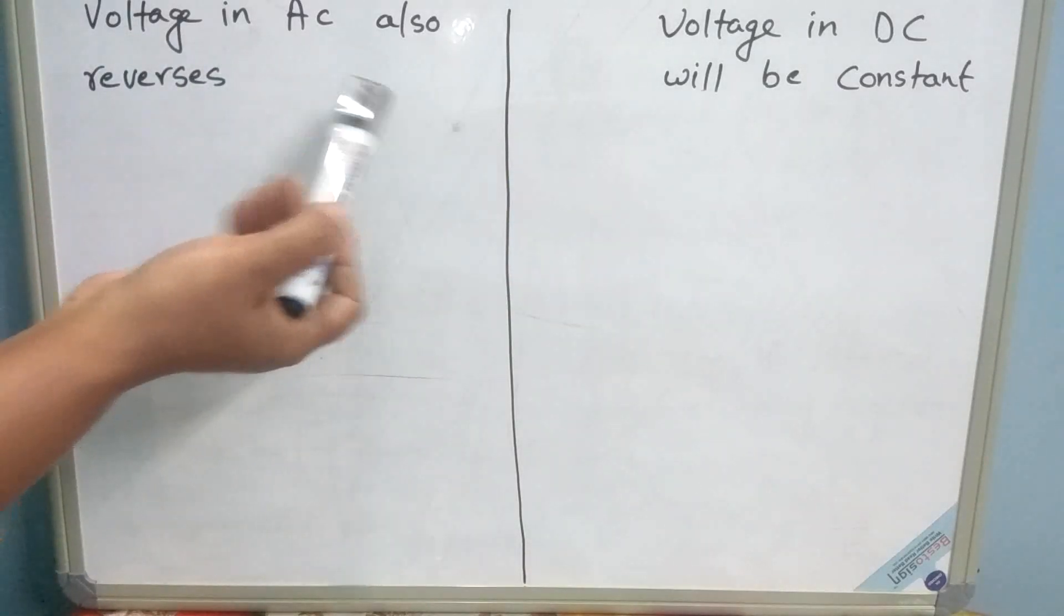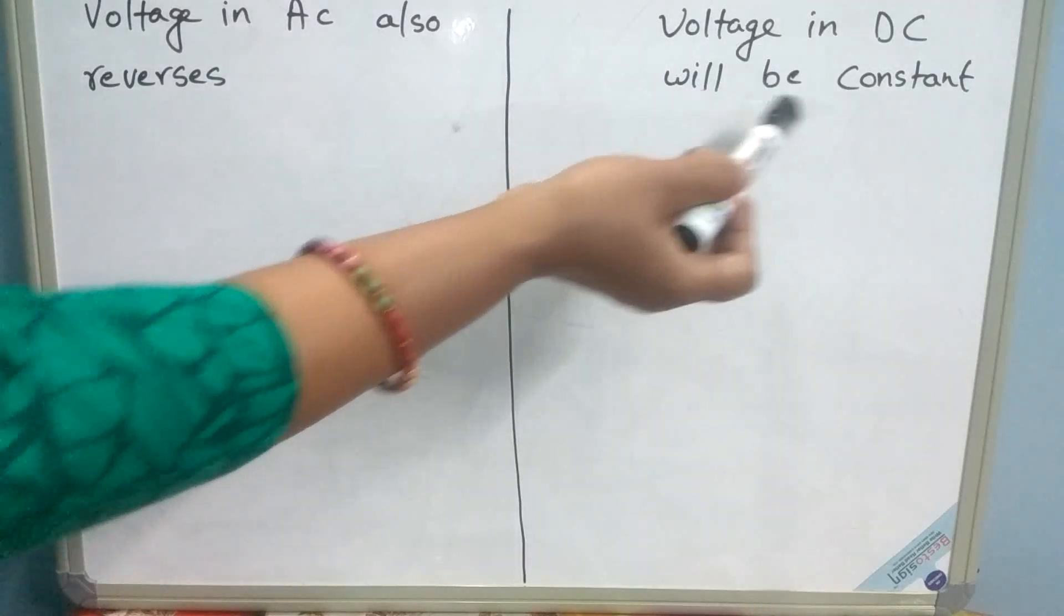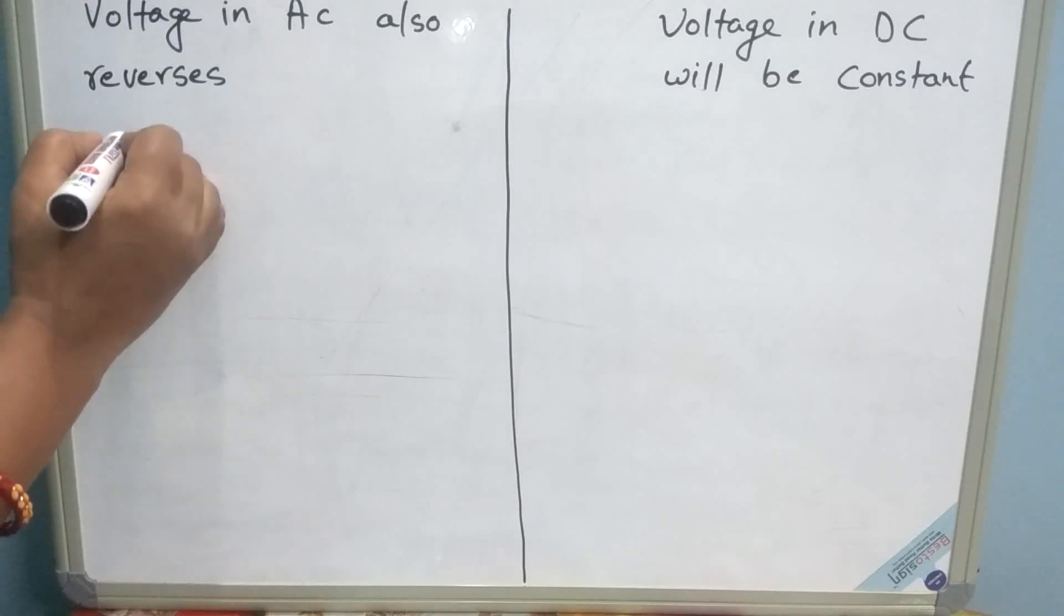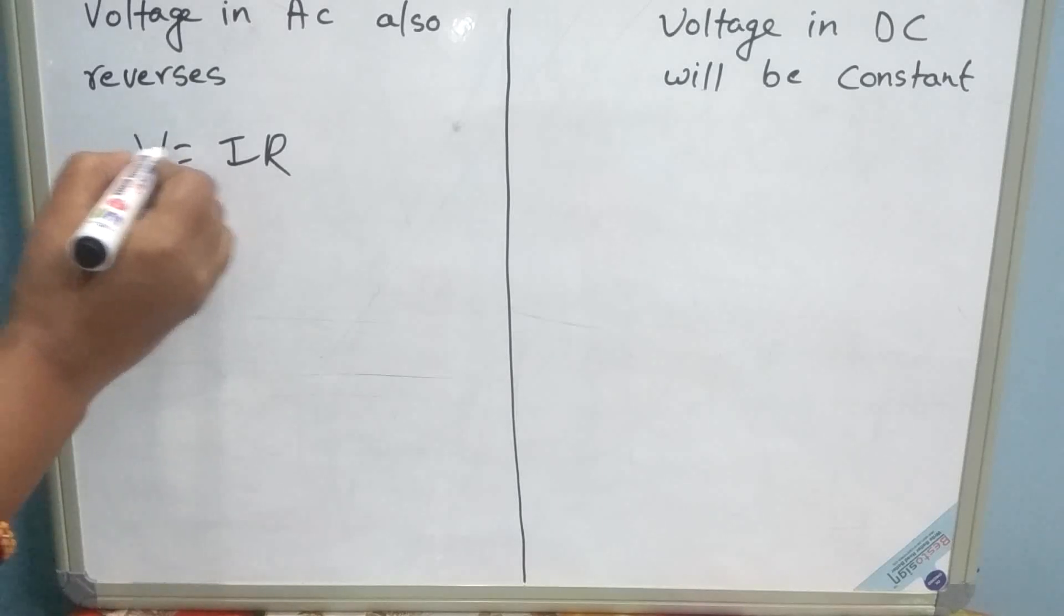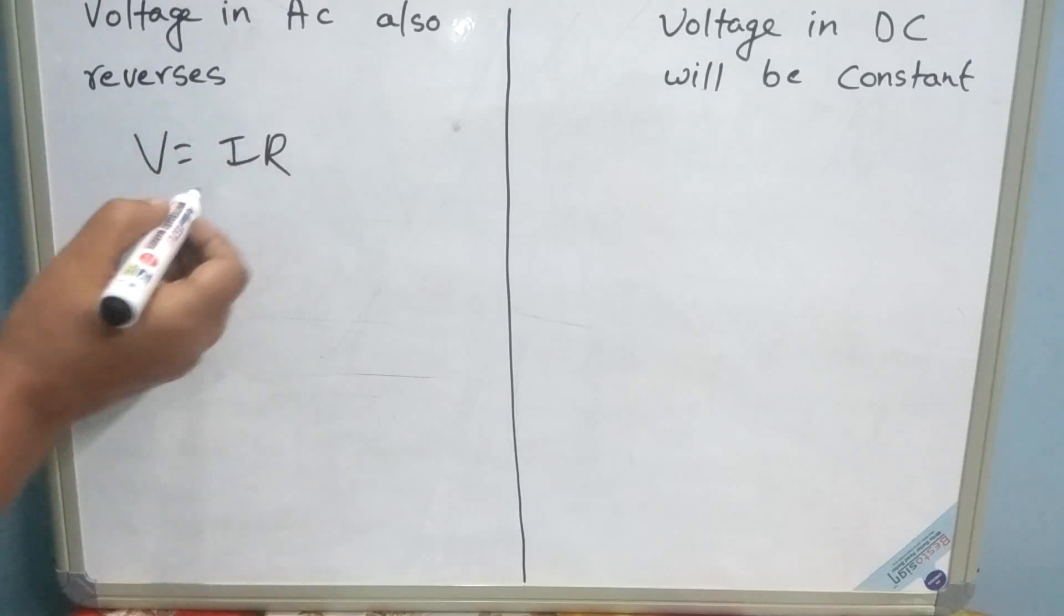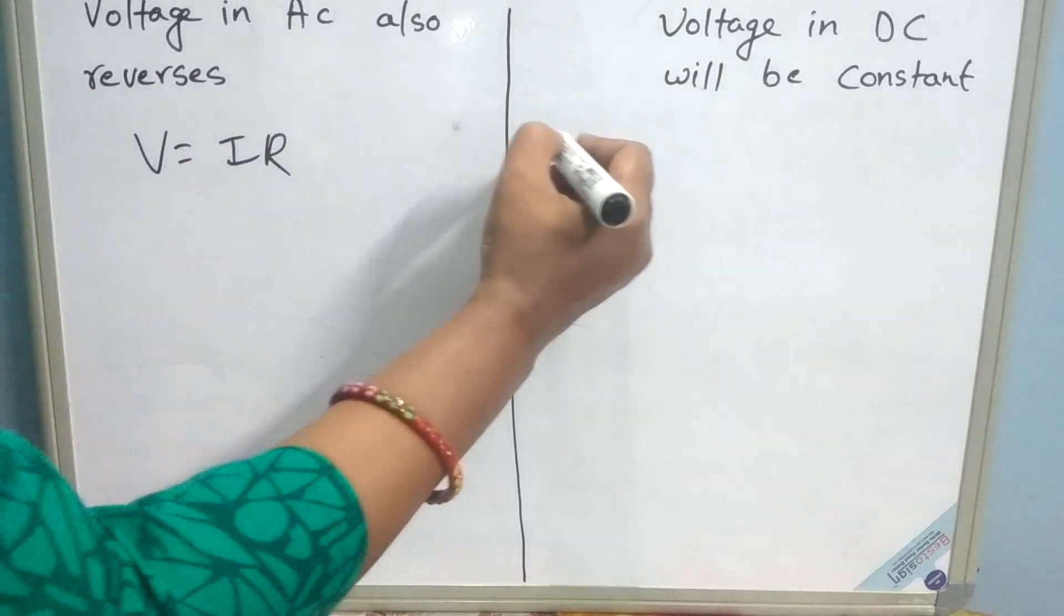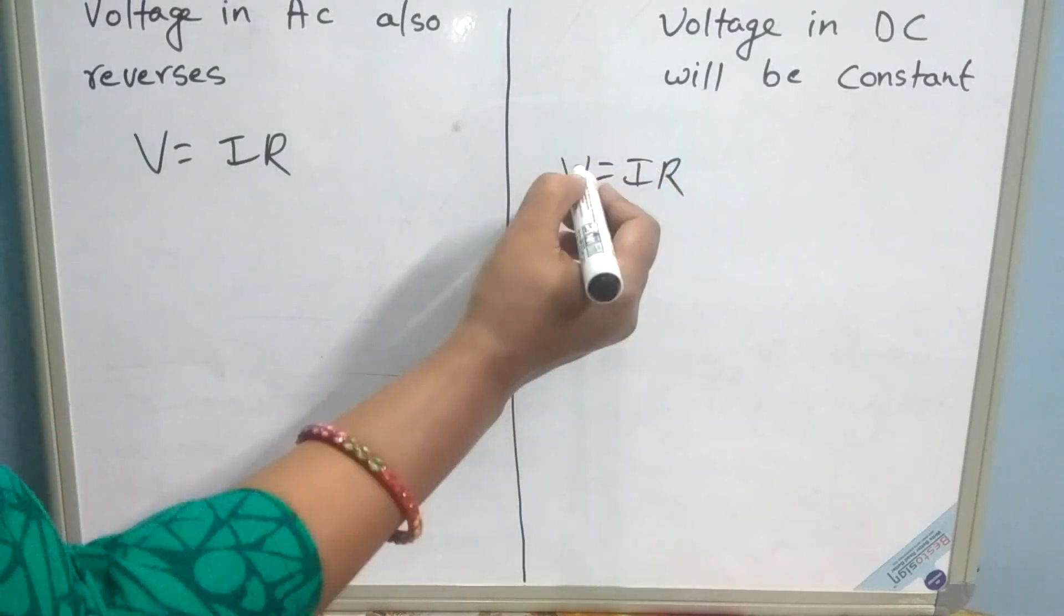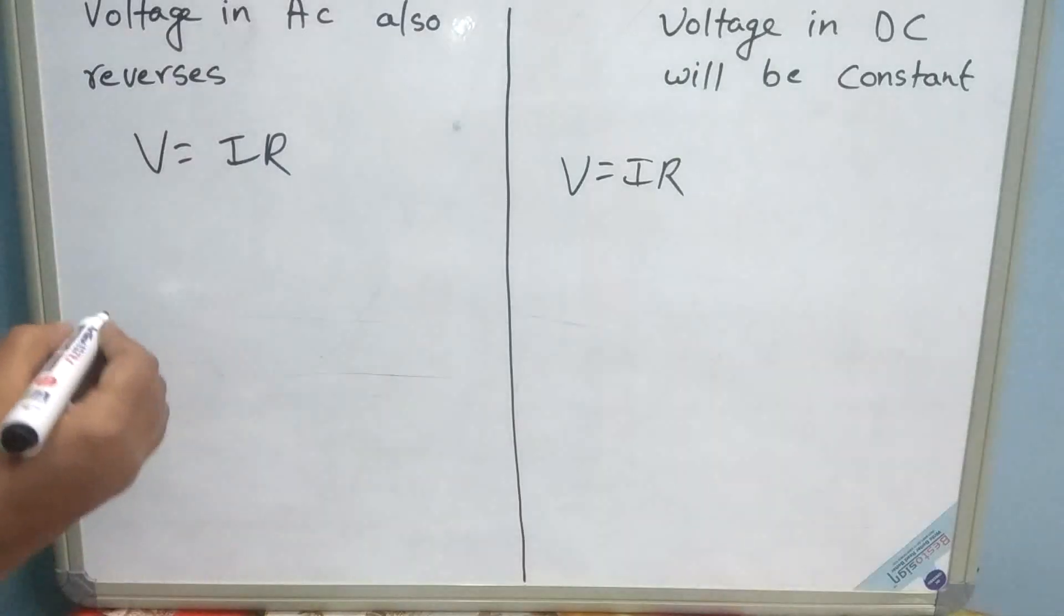Another difference between AC and DC is voltage in AC also reverses its direction, whereas voltage in DC will be constant. We can see this through a formula, why this happens. As we all know, V is equal to IR. So voltage varies with current. Since in AC, the current changes direction, that's why voltage also changes its direction. Whereas in DC, if you apply the same formula, since the current will be constant, the voltage will also be constant.